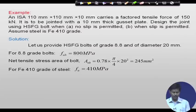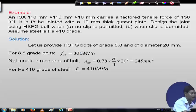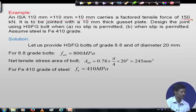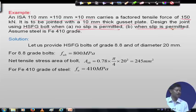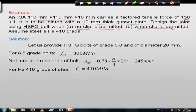The example: An ISA 110×110×10 mm Indian standard angle carries a factored tensile force of 150 kN. It is to be joined with a 10 mm thick gusset plate. Design the joint using HSFG bolts when no slip is permitted, and when slip is permitted. We will use HSFG bolts of grade 8.8 and 20 mm diameter since nothing specific is stated.